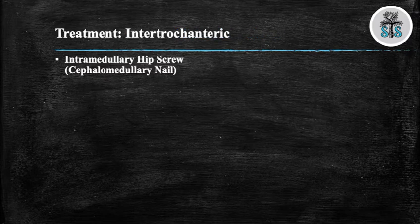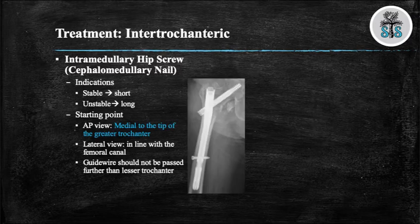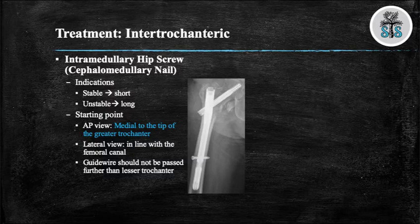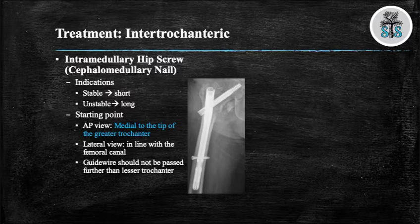We will now discuss intramedullary hip screws, also known as cephalomedullary nails. When you have a stable IT fracture, you use a short cephalomedullary nail. When you have an unstable IT fracture, you use a long cephalomedullary nail. This is performed percutaneously. The ideal starting position on AP radiograph will be just medial to the tip of the greater trochanter as the implant has a 5-degree proximal bend. On lateral radiograph, you want the guide wire in line with the femoral canal.